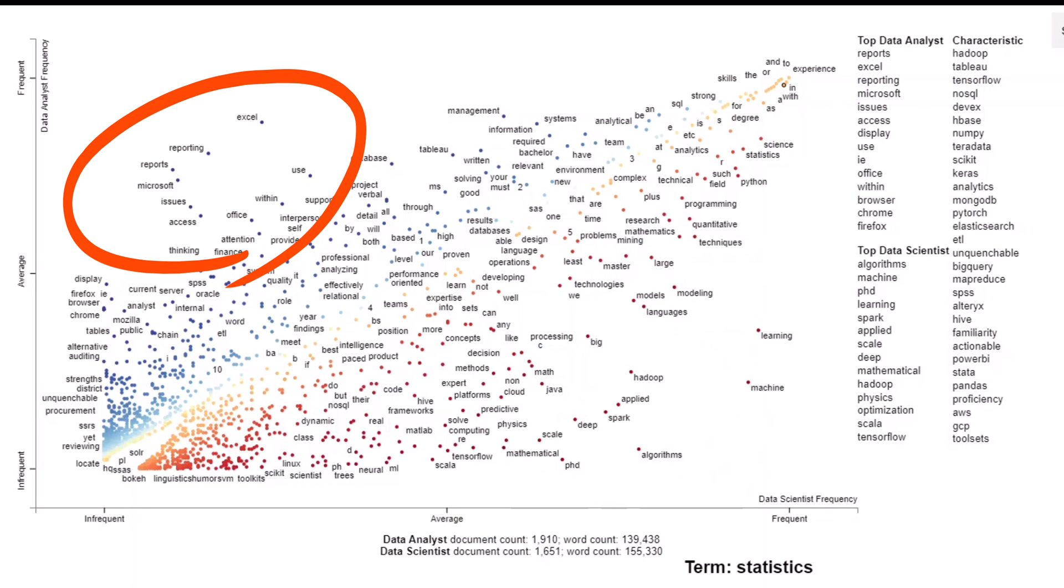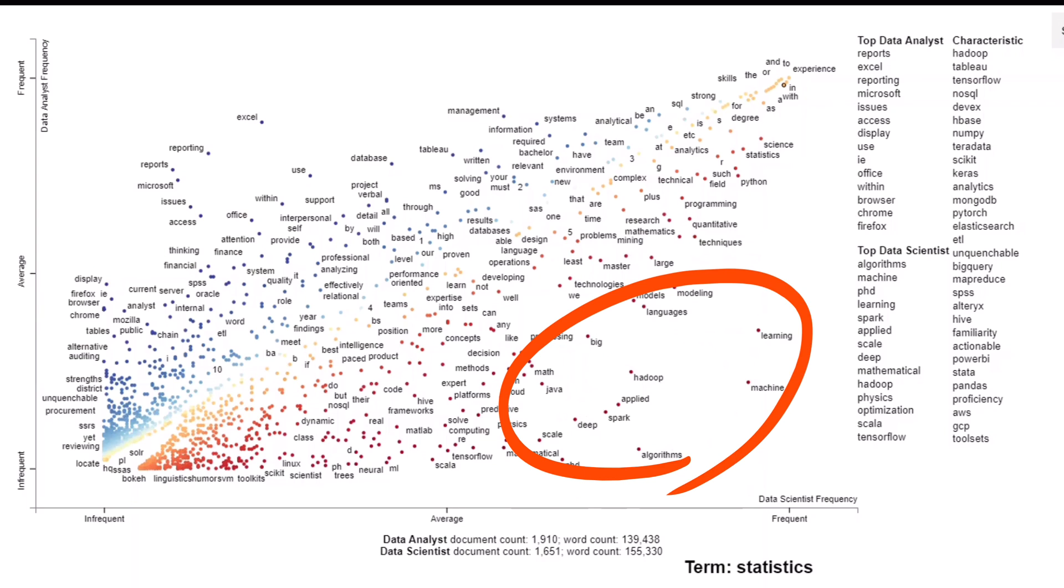Terms in the upper left corner are high in the data analyst frequency and low in the data scientist frequency, and terms in the bottom right corner are high in the data scientist frequency and low in the data analyst frequency. Characteristic terms are the terms that are most associated with the data analyst and data scientist.